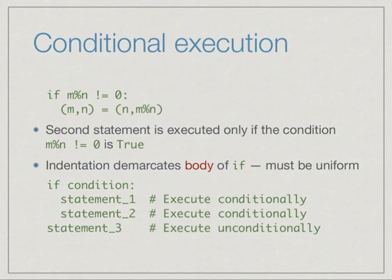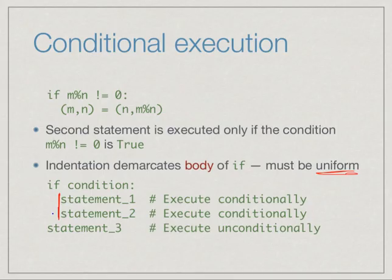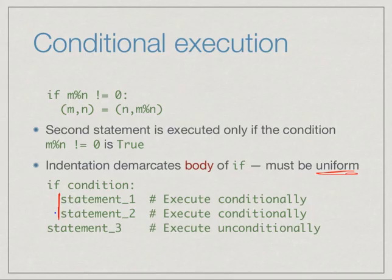One thing to emphasize: indentation must be uniform — the same number of spaces. The most dangerous thing you can do is use a mixture of tabs and spaces. When you press tab it inserts some number of spaces which might look correct on screen, but Python does not equate tabs and spaces and will give you an error message that is not easy to understand. It is quite useful to always use a uniform strategy, for example two spaces, whenever you have a nested block.